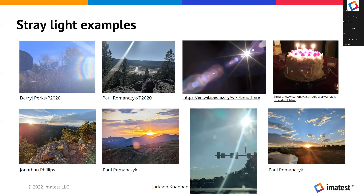Here are some examples of stray light manifesting itself in images. On the top left you can see an image affected by some stray light on the right-hand side, as well as veiling glare which is reducing the overall contrast in the rest of the image. Moving to the top right, the picture of the cake — there's a very clear example of what's called ghosting or ghost reflections, where a perfect reflection of the light from the candlesticks appears at the bottom of the cake.